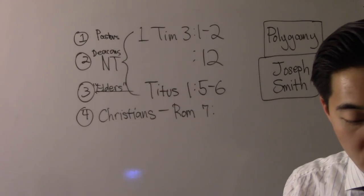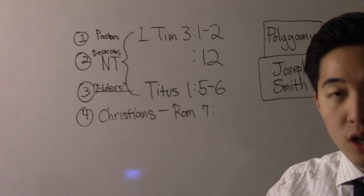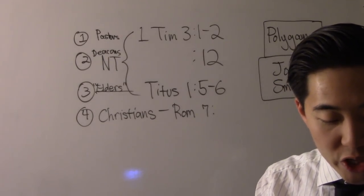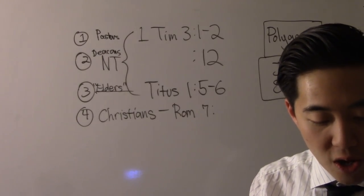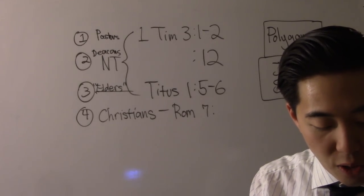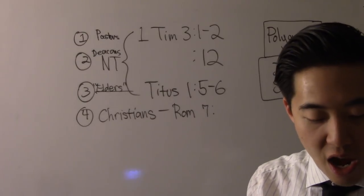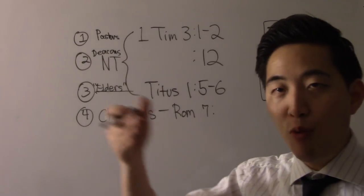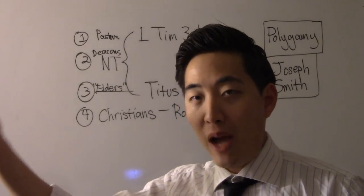Verse 1: Know ye not, brethren, for I speak to them that know the law, how that the law hath dominion over a man as long as he liveth. So the law has dominion over the man in this area. For the woman which hath a husband is bound by the law to her husband as long as he liveth. But if the husband be dead, she is loosed from the law of her husband. So then if, while her husband liveth, she be married to what? Another man, she shall be called an what? An adulteress. So the verse condemns more than marrying one person. Verse 2 says you're only loosed from that marriage when the spouse passes away.